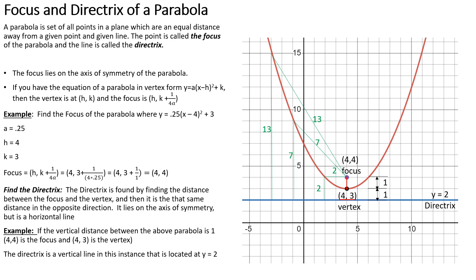Find the focus of the parabola y equals 0.25(x minus 4) squared plus 3. Here k is 3, h is 4, and a is 0.25. The focus is at (h, k + 1/(4a)), so it's at x equals 4 along the line of symmetry, and y equals 3 plus 1 over (4 times 0.25). Since 4 times 0.25 equals 1, it's 3 plus 1 over 1, giving a focus at (4, 4).